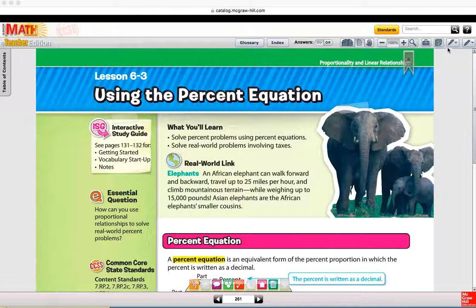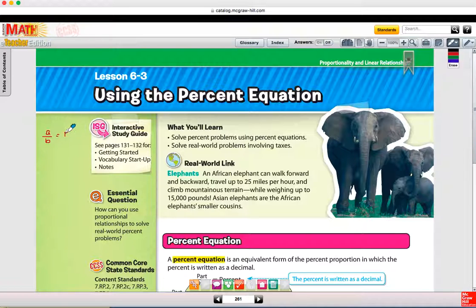For section 6.3, we're looking at yet another strategy for finding percents. Just a refresher, you can set up a proportion where you have part over whole equals percent over 100. That's what we looked at in section 6.1. In section 6.2, we worked on some problems just using mental math. And then in this section, 6.3, we're going to solve percent problems using the percent equation.